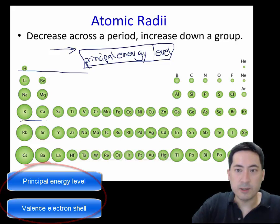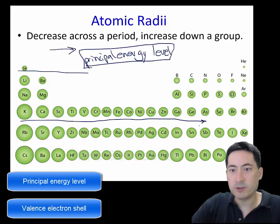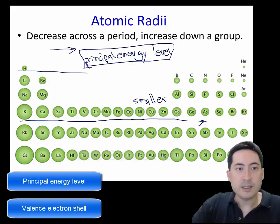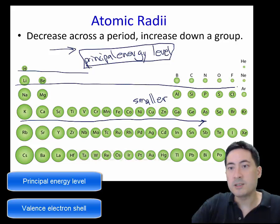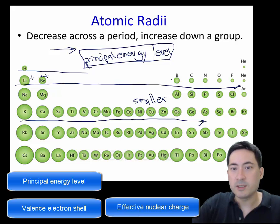If you look across these things here, what you're going to see generally is a general trend is they get smaller as they go across. Now, the reason they get smaller is because it's all the same principal energy level. It's all the same shell. The only thing that's changing is it's getting more and more positive.